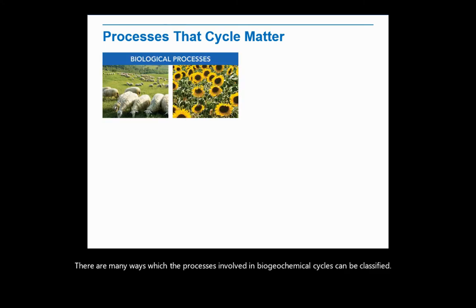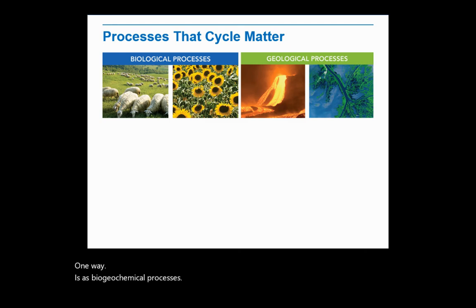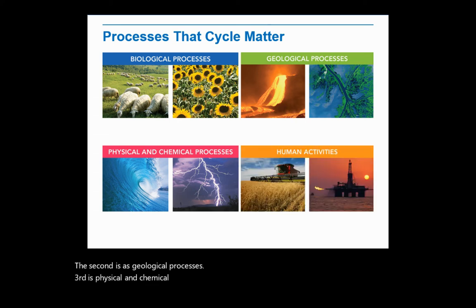There are many ways in which the processes involved in biogeochemical cycles can be classified. One way is as biological processes. The second is as geological processes. The third is physical and chemical processes. And the fourth way to classify them is by human activities.